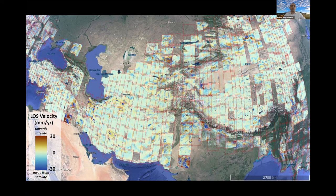We have already done this for some case studies in Anatolia and some parts of Tibet, but we aim at doing this for the whole Alpine-Himalayan belt. For this objective, the Jasmine processing facility will play a very important role. That was it from my side.